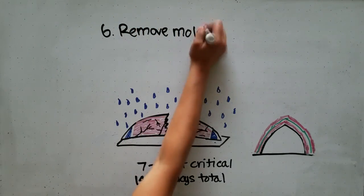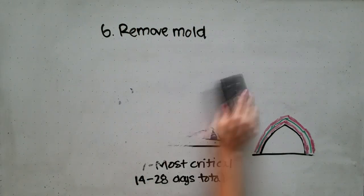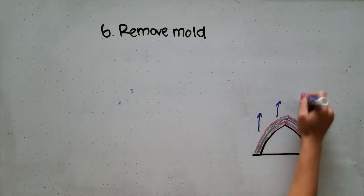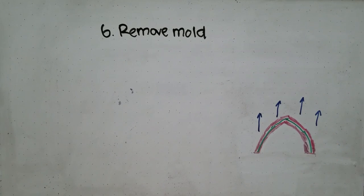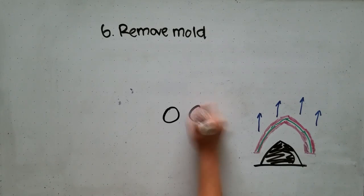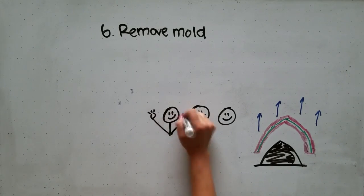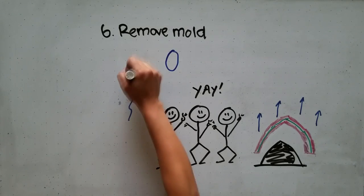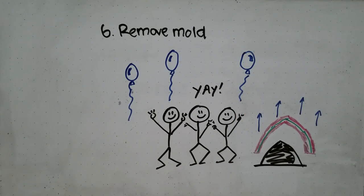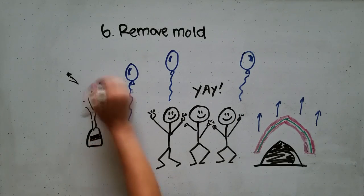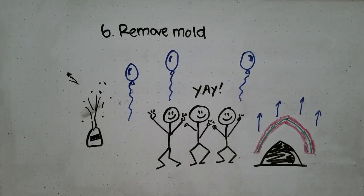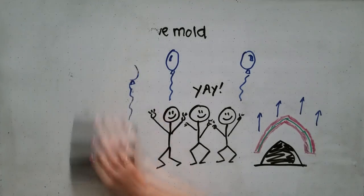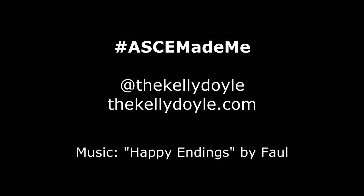The final step of the process is removing the mold, which of course needs to be done carefully. And that's how you build a concrete canoe. Thanks for watching and be sure to follow my blog for more episodes of ASCE with Bad Drawings.